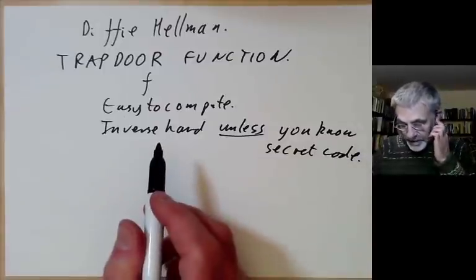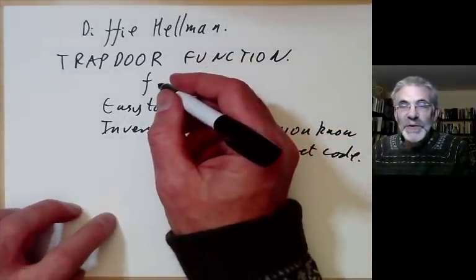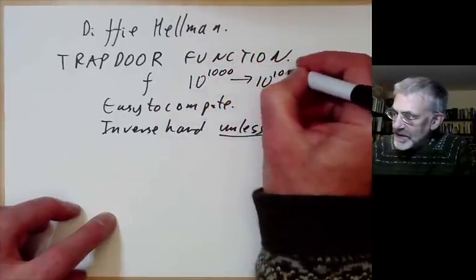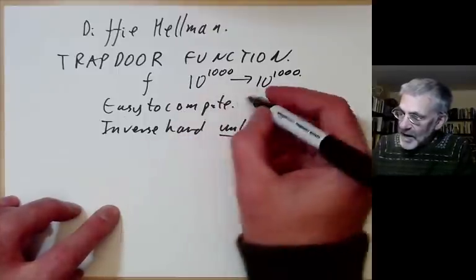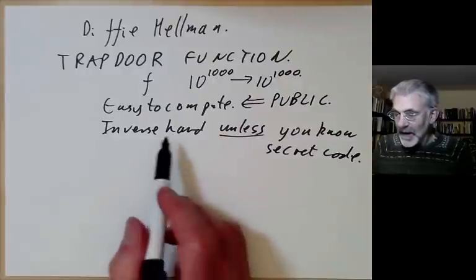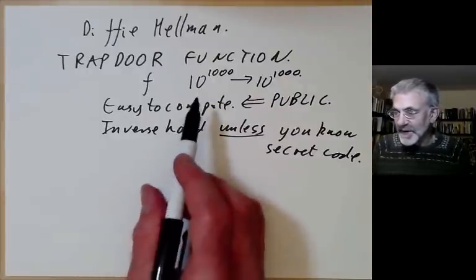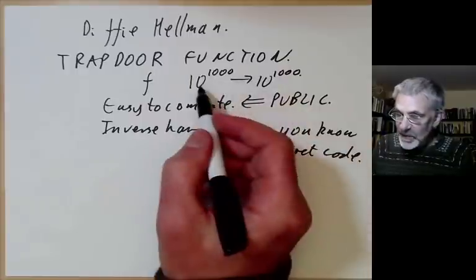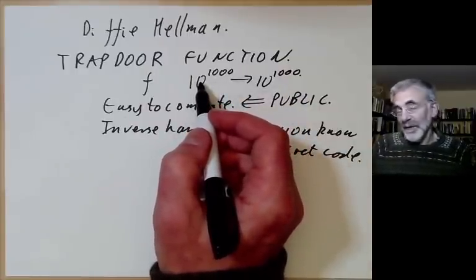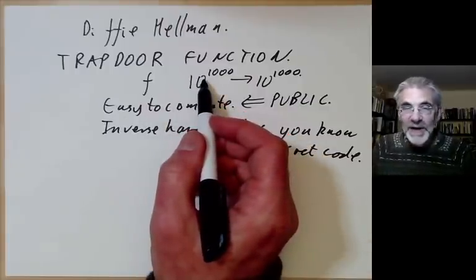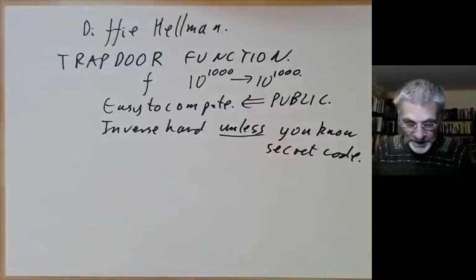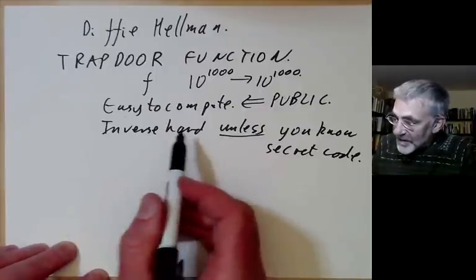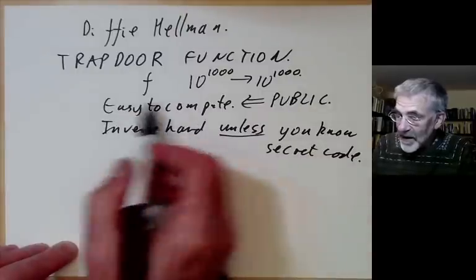A trapdoor function is a function f that is easy to compute, but whose inverse is very hard to compute unless you know some sort of secret. It's usually a function between two finite sets — these sets have to be really large, like all integers less than 10 to the 1000. The method of computing it is made public, but you can't compute its inverse by trying all numbers, because the set is far too large.